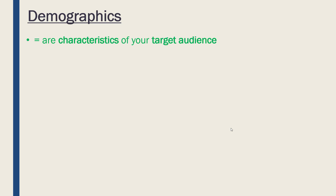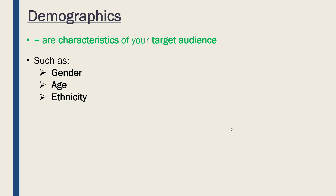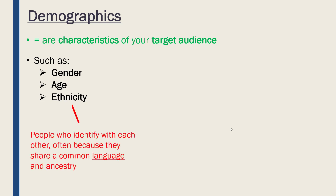In terms of our target audience, let's look first at demographics. These are characteristics of our target audience — things like gender, age, and ethnicity. Ethnicity refers to different groups of people who identify with each other, often because of a shared language or ancestry — that is, who their parents were, the countries they are from, and so on.